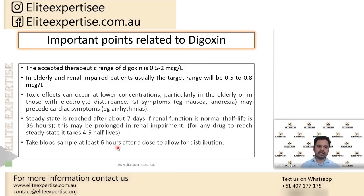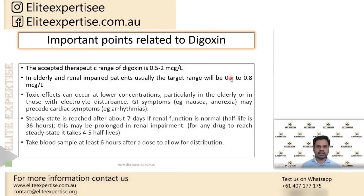The accepted therapeutic range of digoxin is 0.5 to 2 micrograms per liter. However, ideally, especially in elderly patients and those with renal impairment, the target range is 0.5 to 0.8 micrograms per liter. This is because in most cases, when serum digoxin levels even reach 1.2, patients immediately start showing toxic side effects. So we always target 0.5 to 0.8 micrograms per liter.